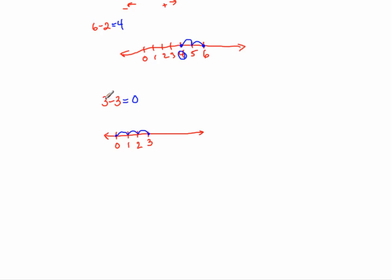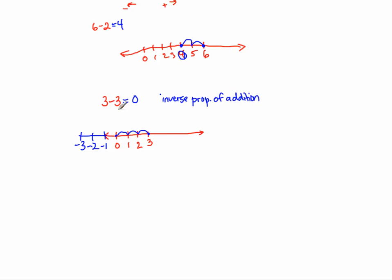The rule says that if you add a number to its opposite, you get 0. So the opposite of 3 on the number line is 3 to the left, which is negative 3. The opposite of 2 is negative 2, the opposite of 1 is negative 1, and the opposite of negative 1 is 1, and so on. So if you add a number to its opposite, you'll always get 0. That's what we call the inverse property of addition. If you're ever asked what's the additive inverse of 3, it just means what's the opposite of 3, which is negative 3.